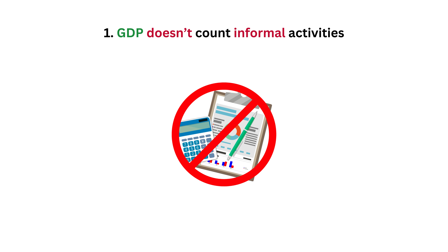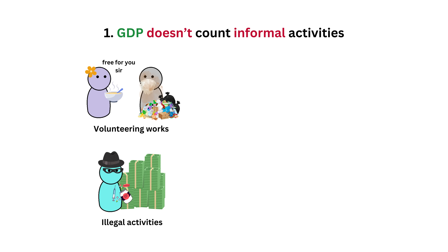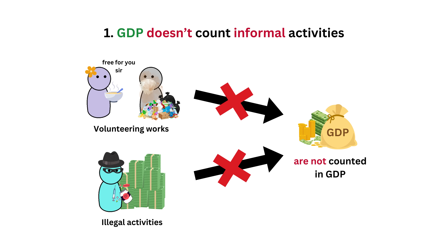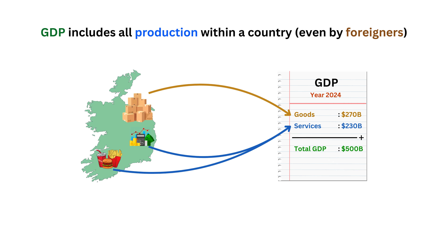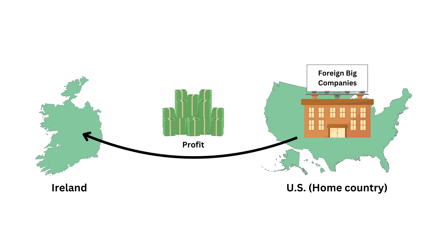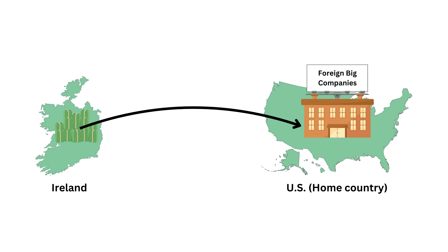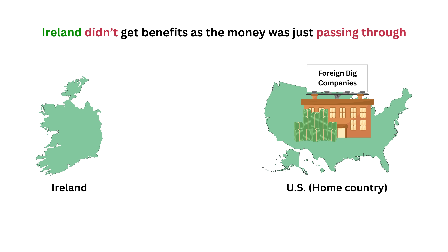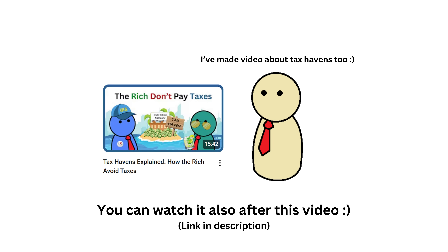However, GDP is not perfect. First, GDP doesn't count informal activities — unpaid work like volunteering, and informal or illegal activities worth billions of dollars are not included in GDP calculations. Second, there is GDP distortion: GDP includes foreign production within a country, and this number can be inflated due to tax haven activities. For example, foreign companies register their profits in Ireland for tax benefits, which are counted as Irish GDP, but the money is immediately sent back to their home countries — meaning Ireland and the Irish people don't really benefit.